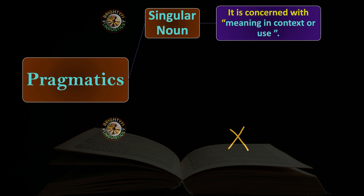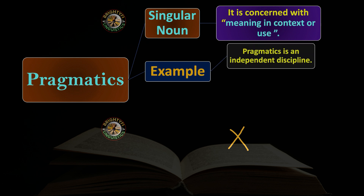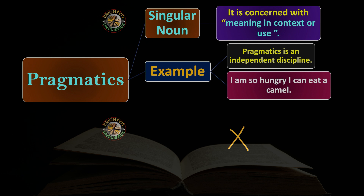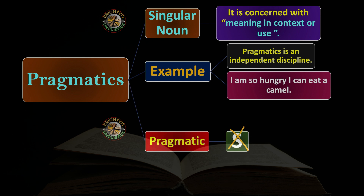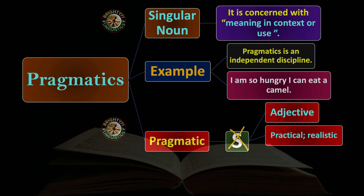Pragmatics is a singular noun concerned with meaning in context or use. For example: 'Pragmatics is an independent discipline.' Consider the sentence 'I'm so hungry I can eat a camel' — of course a person cannot literally eat a camel, but the context conveys that the person is extremely hungry, exaggerating the intensity of hunger. Note that 'pragmatic' without S is an adjective meaning practical or realistic, entirely unrelated to the linguistic discipline.